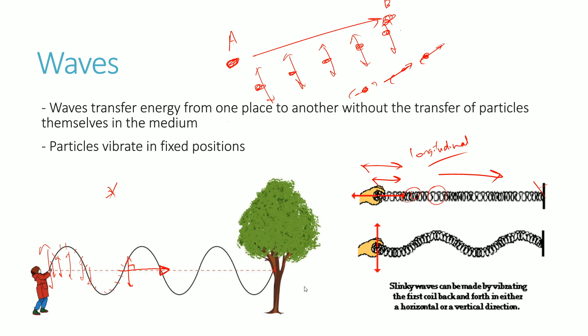If you shake the spring up and down, the positions of the particles are going up and down about their oscillation, which is at 90 degrees to the movement of the wave. That 90-degree angle confirms it's a transverse wave.